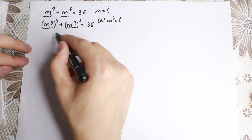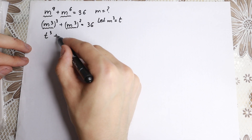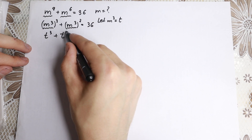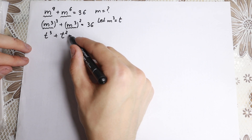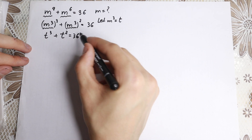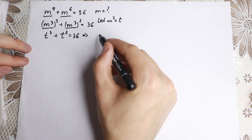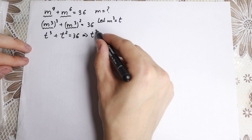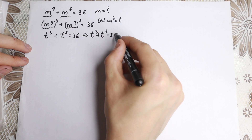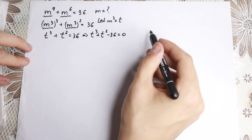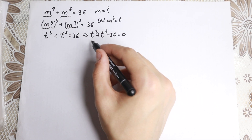Let m-cubed equal t. If it's equal to t, we will have t-cubed plus t-squared. I bring the 36 to the left-hand side, so t-cubed plus t-squared minus 36 equals zero. We have this cubic equation, and there are a lot of approaches to solve it.